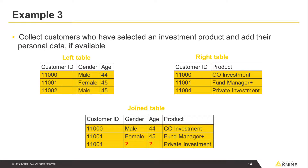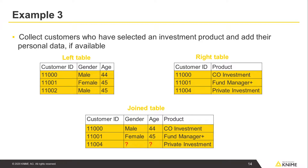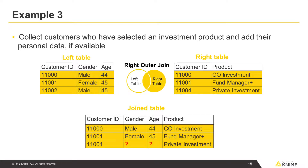The opposite goal would be to collect only those customers who have selected an investment product. We also want to add their personal data if available. The join table therefore includes all the rows from the product's right table. For those rows that can't be matched with any row from the personal left table, the gender and age columns will be filled with missing values. This join mode is called right outer join.